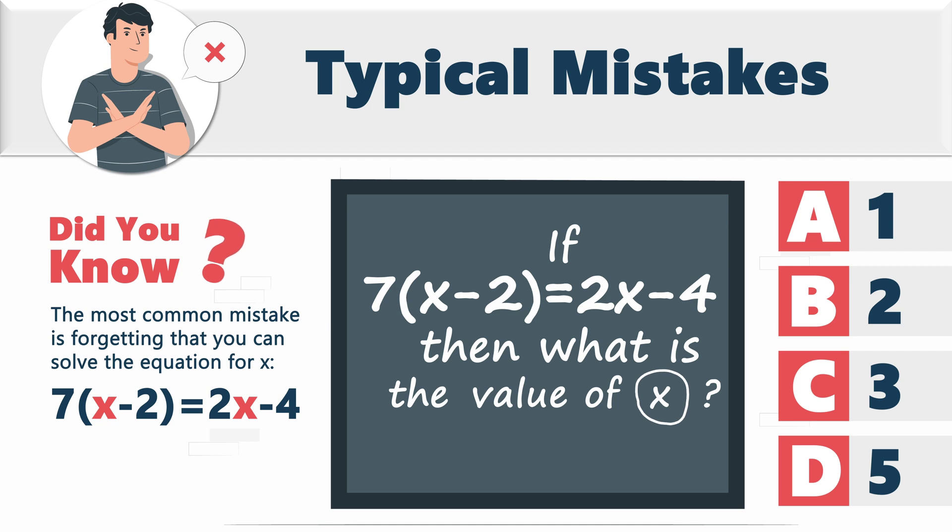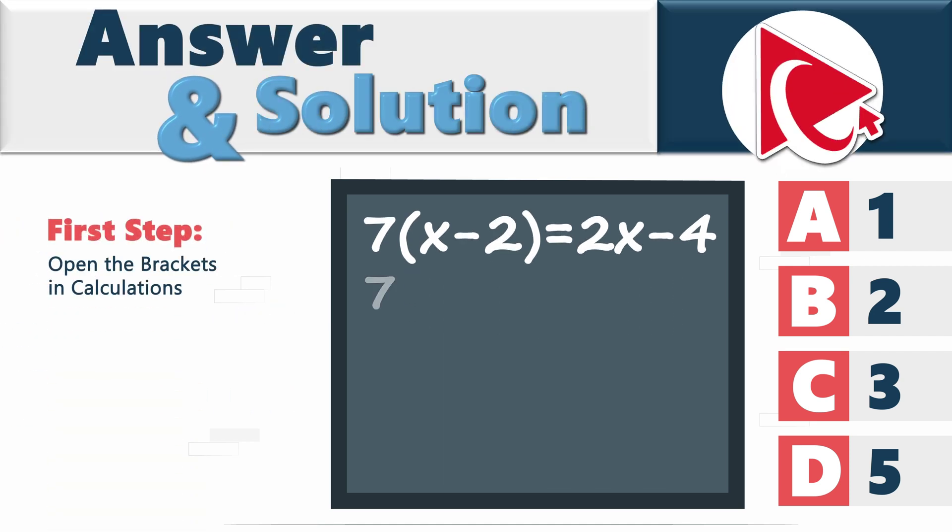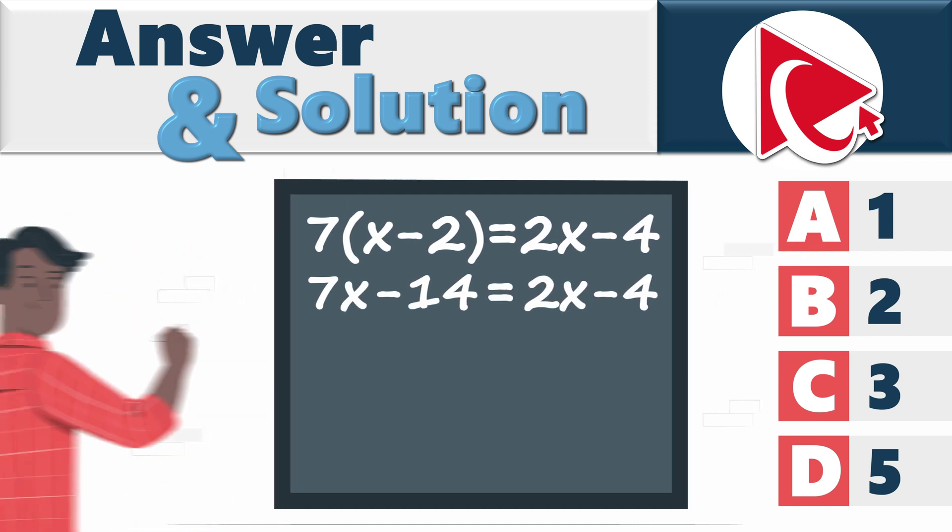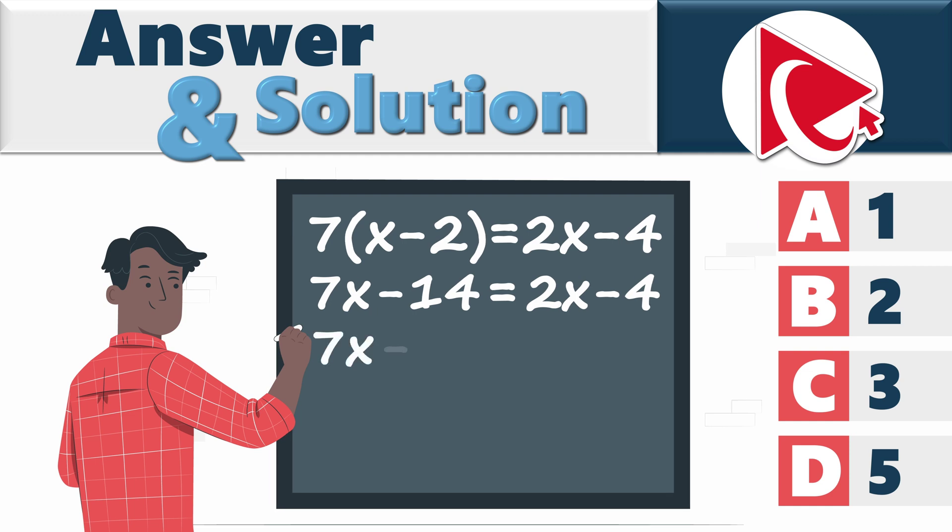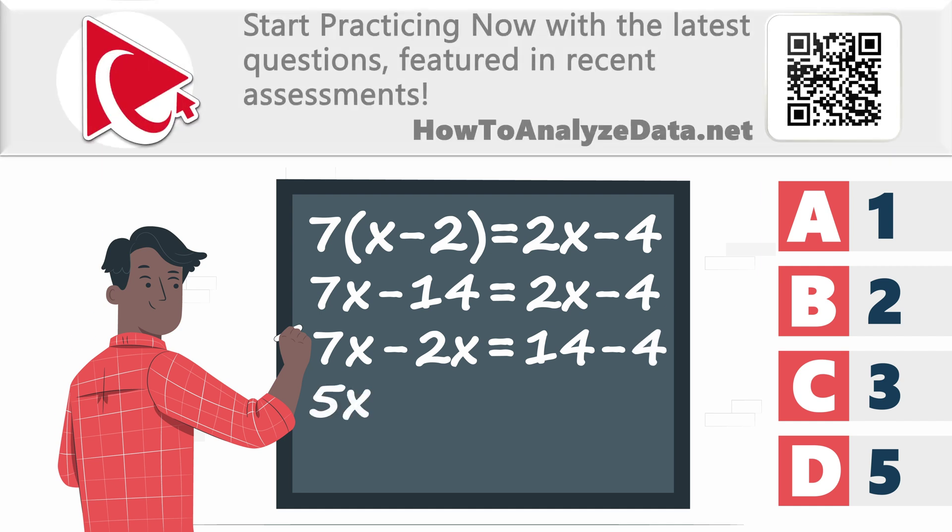Let's look at how you can do it. The first step would be to open the brackets. The result will be 7x minus 14 equals 2x minus 4. In the next step, you calculate 7x minus 2x, which would equal 14 minus 4. The result of this would be 5x equals 10, which helps us calculate x, which would equal 2. So the correct answer here is choice B, 2.